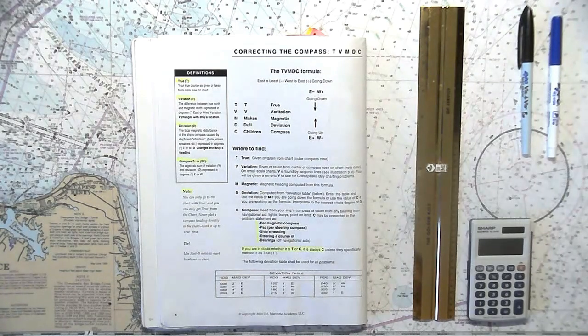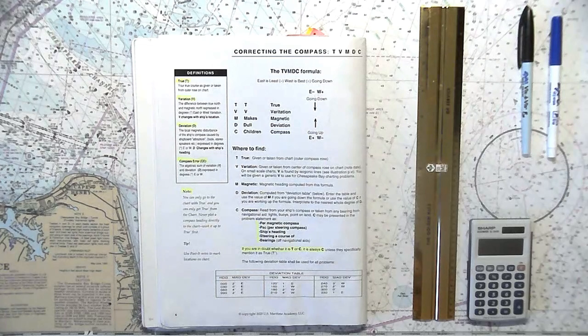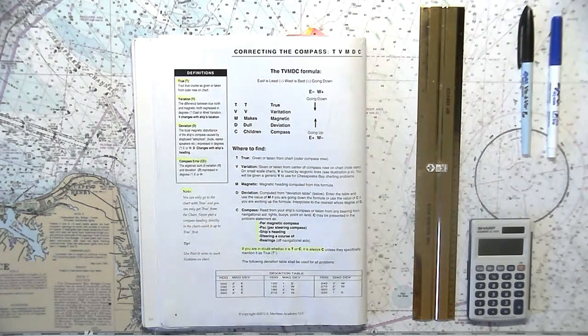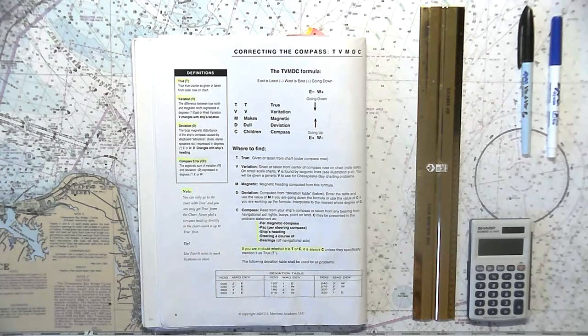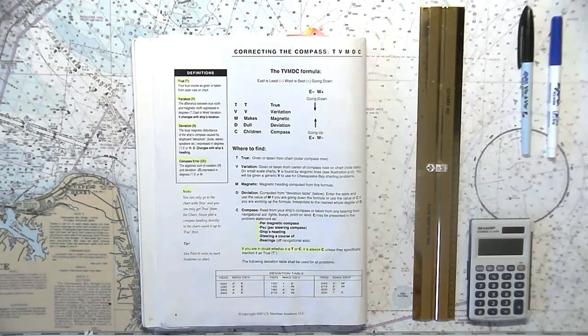The TVMDC formula allows you to take a true course and convert it to a magnetic course and vice versa. In other words, it allows you to take a course that is drawn on a chart and convert it to a course that you can steer from your helm. The opposite is also true. You can take a course that you're reading off your ship's compass and convert it so that you can draw it on the chart.